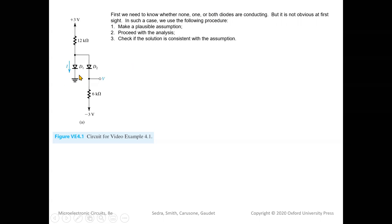We cannot determine the operation modes of both diodes at first sight. We use a standard procedure: first make our best guess by observing the circuit, then proceed with analysis under that assumption, and finally check if the solution is consistent with the assumption.